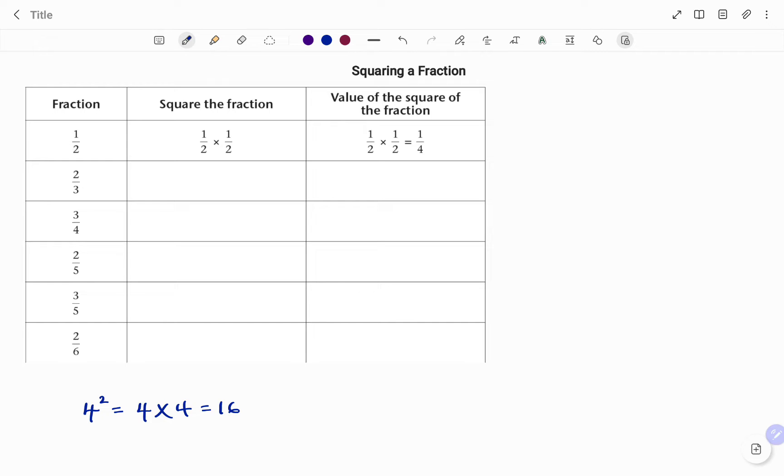In the second example, the squared fraction will be 2 over 3 times 2 over 3. That's the same as for the numerator, 2 times 2, divided by the denominator, 3 times 3. Our answer will be 2 times 2, which is 4, over 3 times 3, which is 9.